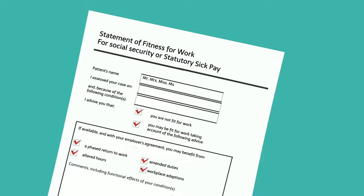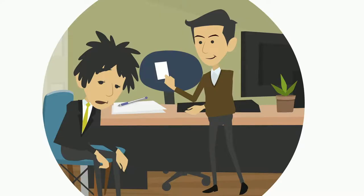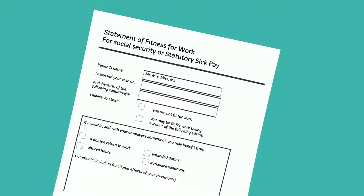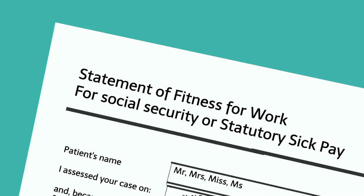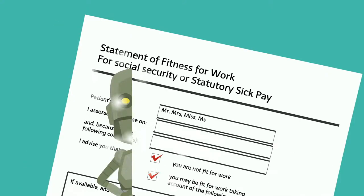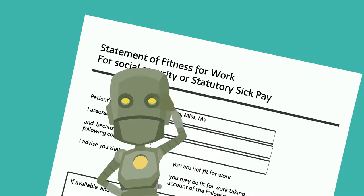Statements of fitness for work are issued by GPs. The note can confirm that an individual is unfit for work or whether a return is possible with workplace adjustments. This could include a phased return. Your cooperative should consider whether the adjustments can be accommodated. Don't forget that disabled people have the right to reasonable adjustments.